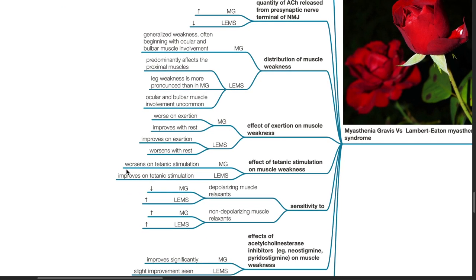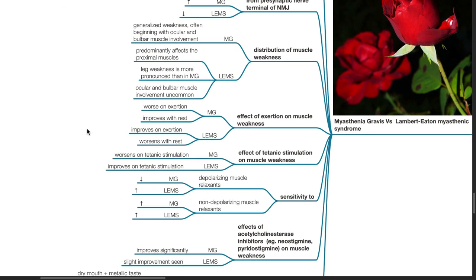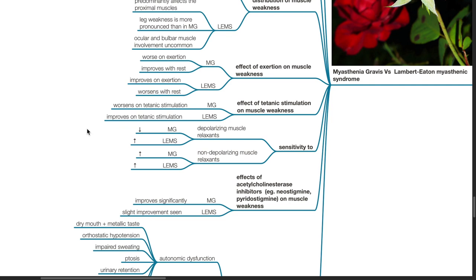Effect of exertion on muscle weakness. In MG, weakness is worse on exertion and improves with rest. In LEMS, weakness improves on exertion and worsens with rest. Effect of tetanic stimulation on muscle weakness. In MG, weakness worsens with tetanic stimulation. In LEMS, weakness improves on tetanic stimulation.